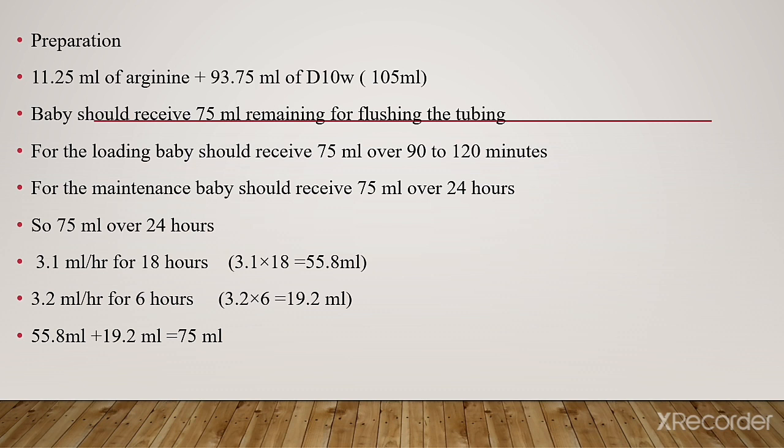Preparation: 11.25 ml of arginine plus 93.75 ml of dextrose, totaling approximately 105 ml. Baby should receive 75 ml, with the remainder for flushing the tubing. For the loading dose, baby should receive 75 ml over 90–120 minutes. For maintenance, 75 ml over 24 hours: 3.1 ml per hour for 18 hours equals 55.8 ml, and 3.2 ml per hour for 6 hours equals 19.2 ml, totaling 75 ml. Thank you.